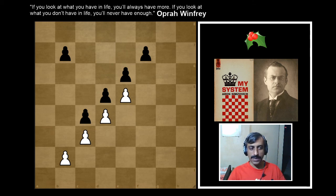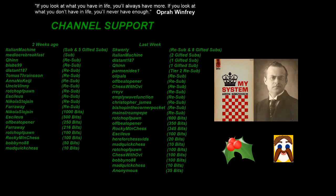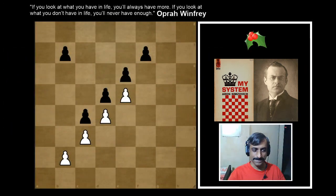Alright, we conclude this part of Nimzovich's My System here, and we should continue onwards from the next one. Here is a look at the recent channel support from my Twitch stream — a couple of new supporters: Italian Machine and Mediocre Breakfast. Italian Machine is Christopher Pace, a strong National Master from Canada with a FIDE rating of 2100 plus. Mediocre Breakfast is also a solid player, originally from Ukraine, living in the US currently. Thanks a lot for the kind support, everyone. Much appreciated. Alright, till next time. Take care.